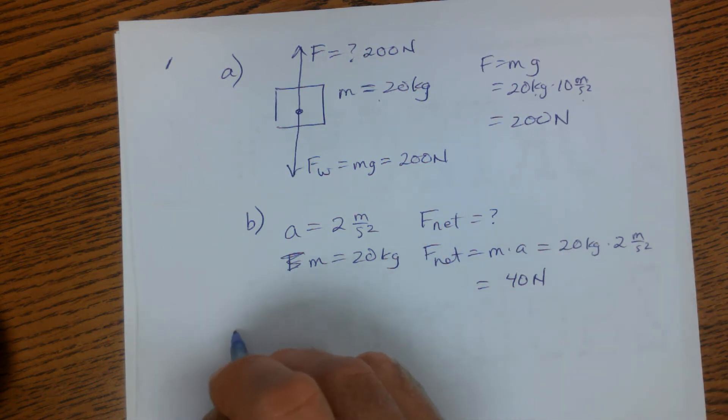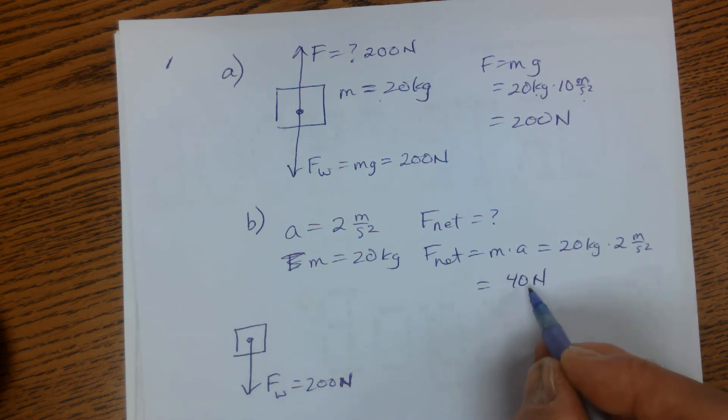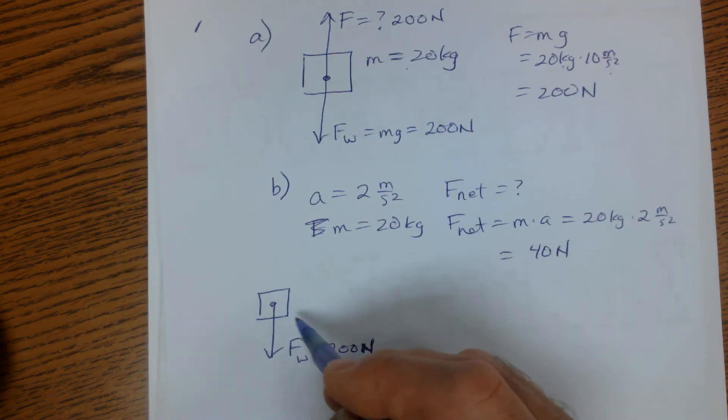And so going back to my diagram here, if the force of weight is a constant 200 newtons, remember my net force has to be 40, but I got to at least provide enough to balance it.